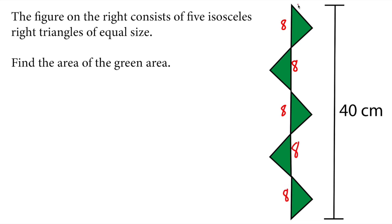We can see that the right angle is at this corner right here. What we need to do is find this side length. If this is the perpendicular line, it can act as the height and this can act as the base. I need to find either one of them because height and base are the same — that is the isosceles triangle. So we will use the Pythagorean theorem.